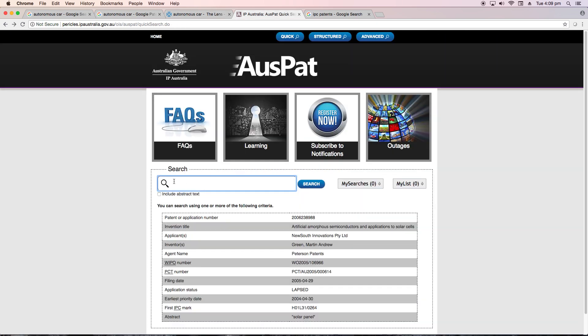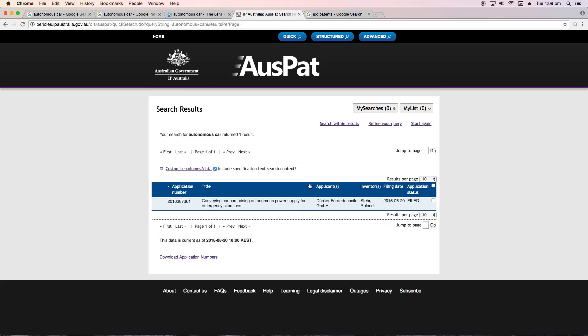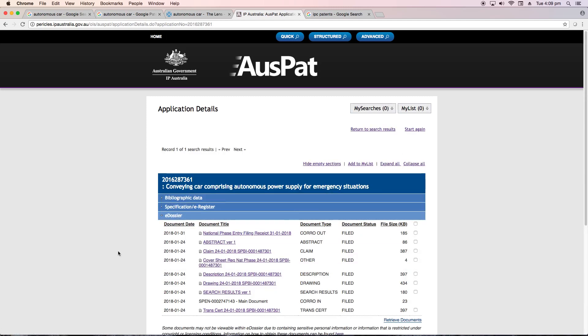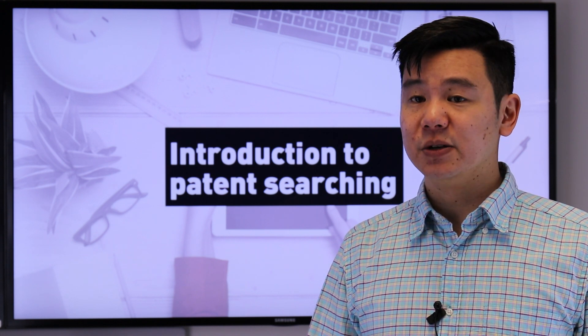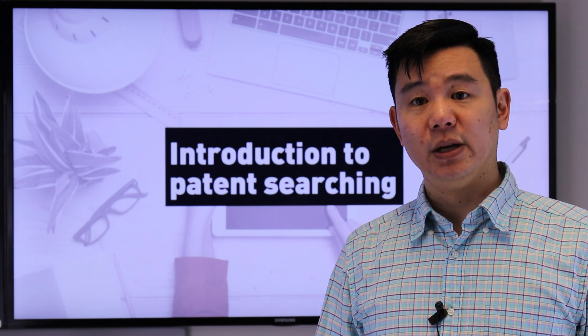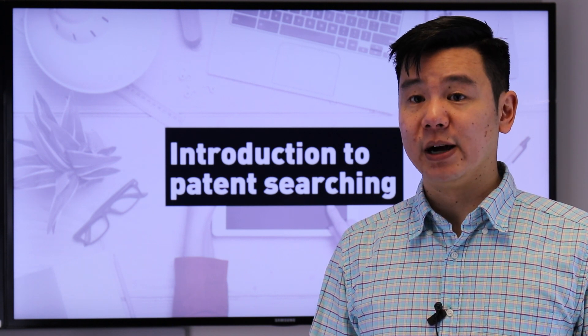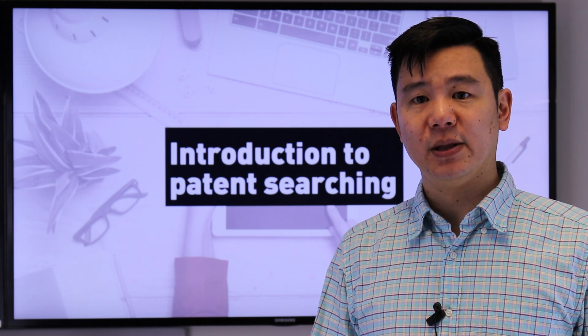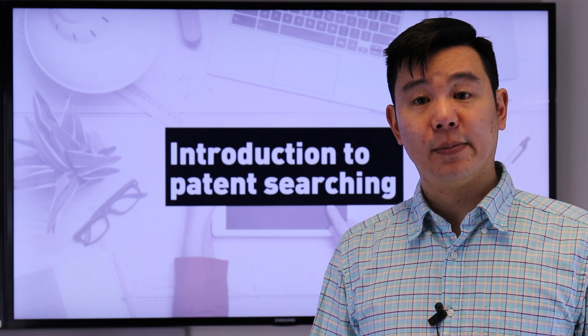And finally, there's AUSPAT, produced by IP Australia as a dedicated search tool for the Australian patent database. While you'll only find Australian patents and applications, it does have the advantage of being able to look at the entire case history for all of those results. Put basically, when an examiner reviews a patent, their search history is made available for you, so you can follow the trail if it's of interest. This can be especially useful if you're searching to see how the local market looks or want to keep an eye on your competitors to see how their applications have fared.